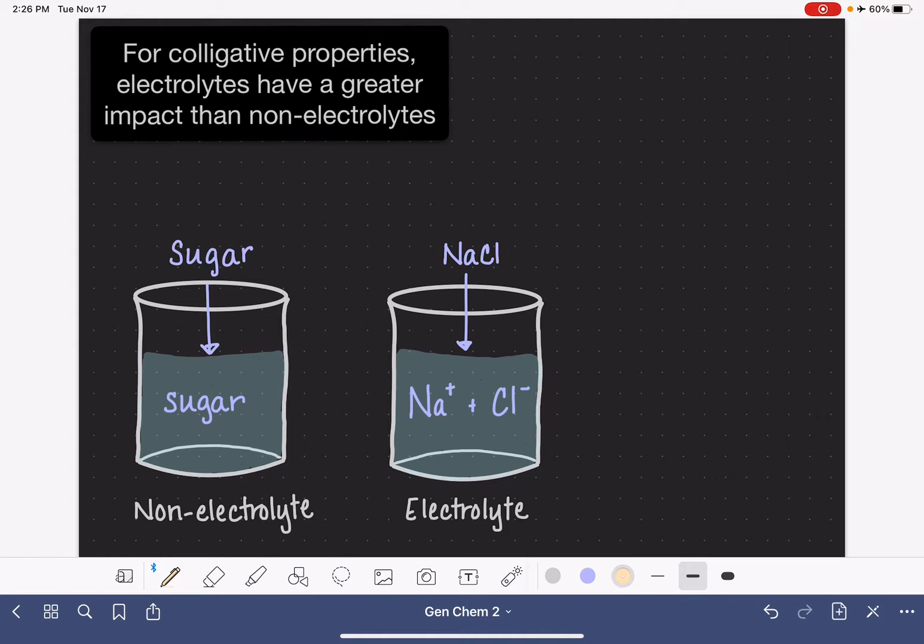Electrolytes have a greater impact on colligative properties than non-electrolytes. The colligative properties are the boiling point elevation, which is calculated by taking the boiling point constant and multiplying it by the molality of the solution, the freezing point depression, which is calculated the same way using a different constant, and osmotic pressure, which is calculated by taking the molarity of the solution and the temperature and multiplying them by the gas constant, R.